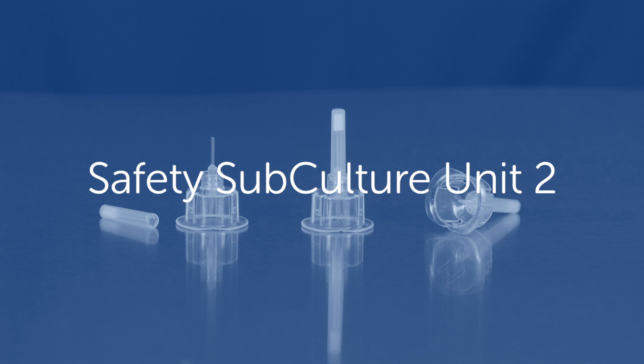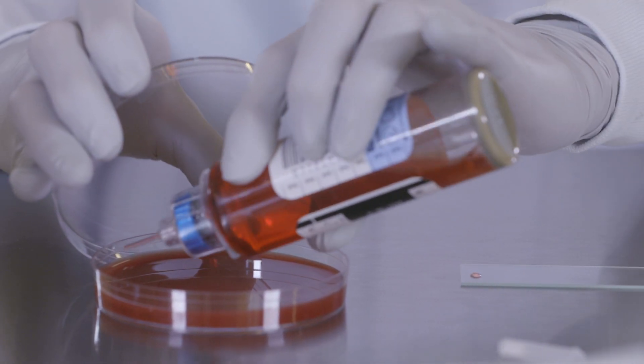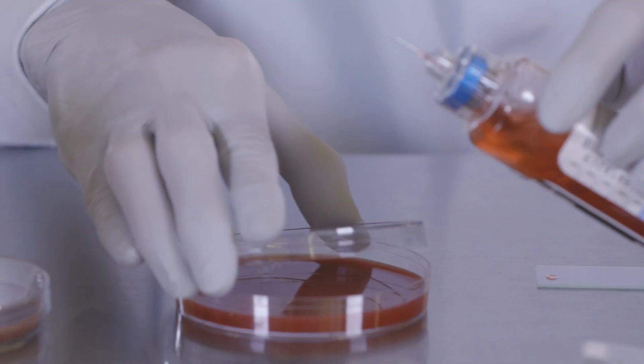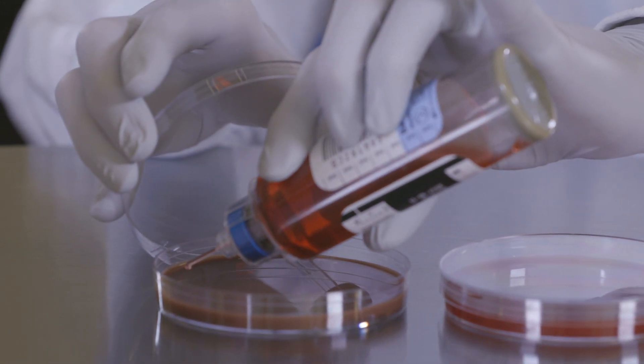The ITL Safety Subculture Unit 2, referred to in this video as the SCU-2, is a needleless device used to safely dispense sample from blood culture bottles. It replaces other commonly used devices such as venting needles or needles and syringes which have inherent potential risks for needle stick injuries.